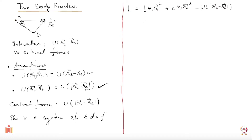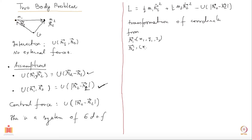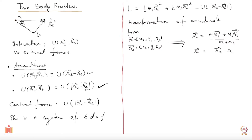We want to do a transformation of coordinates from r1 — that is x1, y1, z1 — and r2 — which is x2, y2, z2 — to capital R, which I denote as the center of mass: m1 r1 plus m2 r2 over the total mass m1 plus m2, and small r which is r2 minus r1. So I go from these 6 coordinates to these 6, because capital R is a 3-vector with 3 components and small r is also a 3-vector with 3 components.